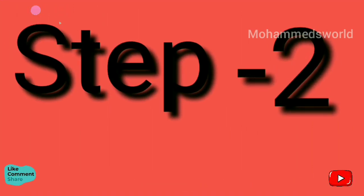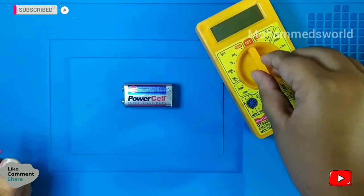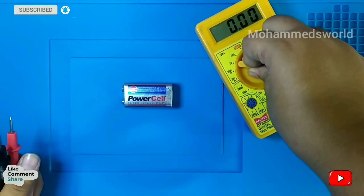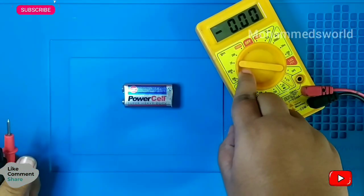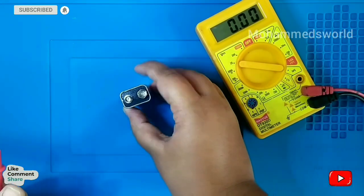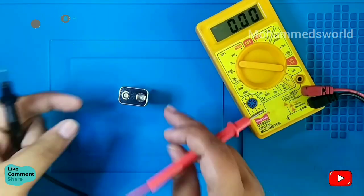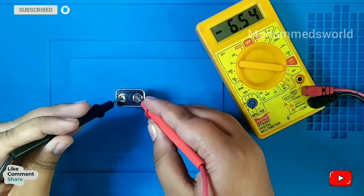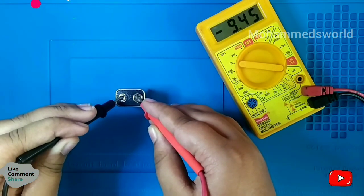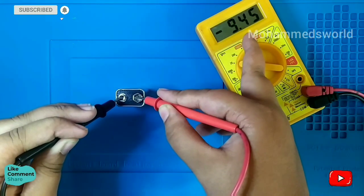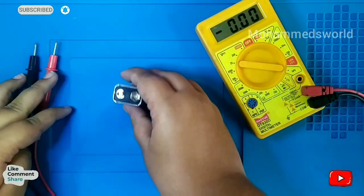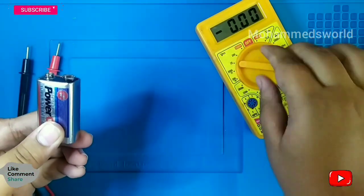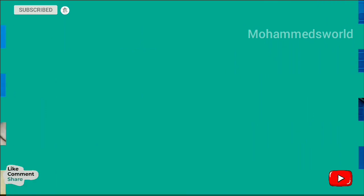Step 2: In step 2, we are going to test 9 volts battery how much the battery voltage gives us. Take multimeter and keep in left side 20 volts. The voltage is 9.45 volts, then battery is working.